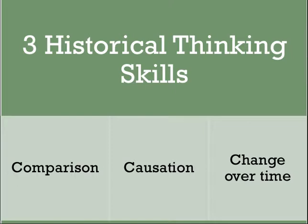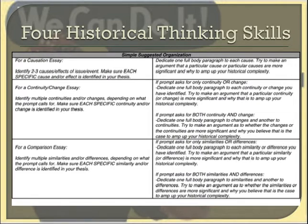When writing any essay in a history class, you're thinking in terms of one of the three historical thinking skills: comparison, causation, or change over time. It's essential that when you read the prompt you identify which skill the question is asking. For a causation essay, rank the causes or effects and argue which was most important. For a change or continuity essay, have a paragraph on changes and a paragraph on continuities, arguing which was most influential over time. For a comparison essay, have a paragraph on similarities and differences, arguing which was more pronounced. Pause or screenshot this slide — keep it close all year.